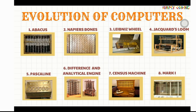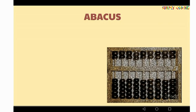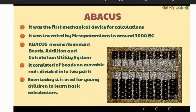The first one is the Abacus. As you can see in the image, the Abacus was the first mechanical device for calculations. It was invented by Mesopotamians around 3000 BC. But in many books you will also see that the Abacus was developed in China as well, so both are different theories.